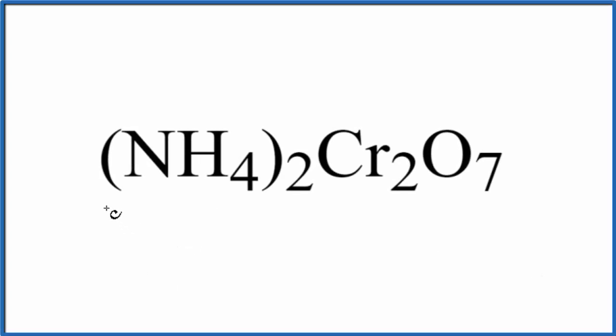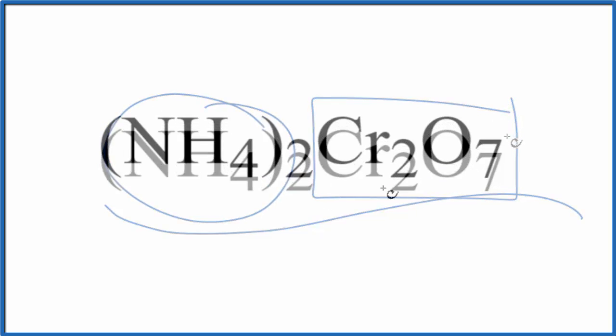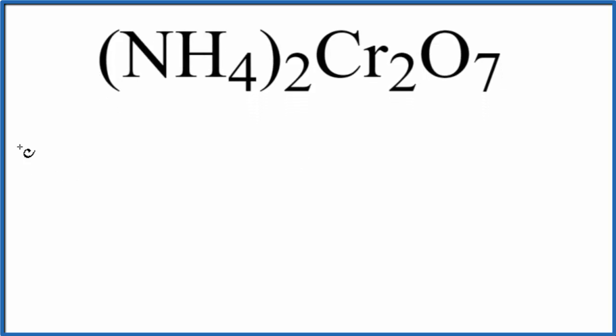Let's find the number of atoms in (NH4)2Cr2O7. This is ammonium dichromate. So let's first write each element here.